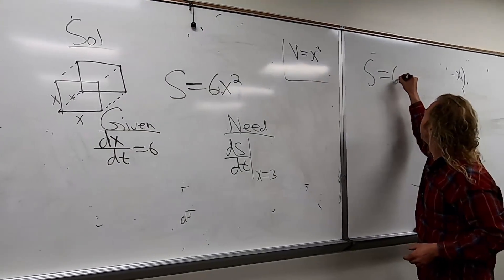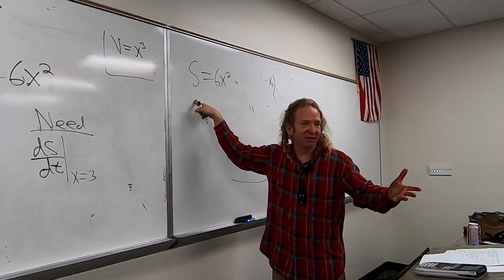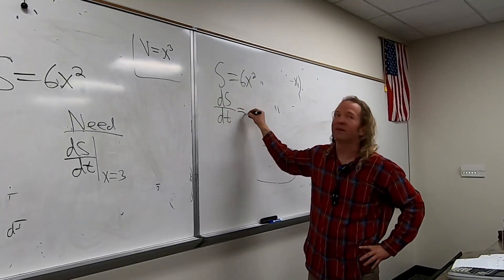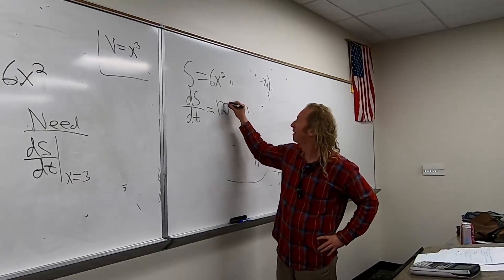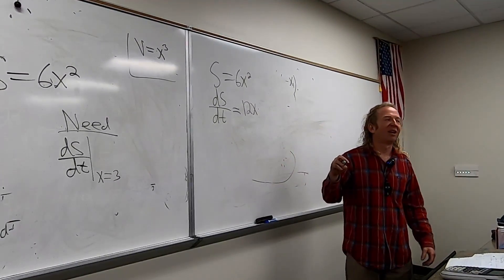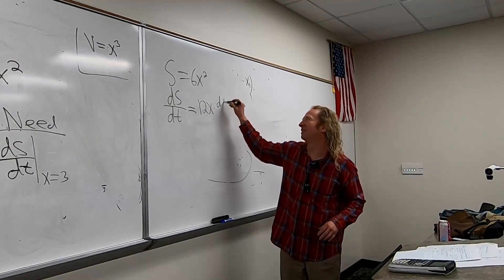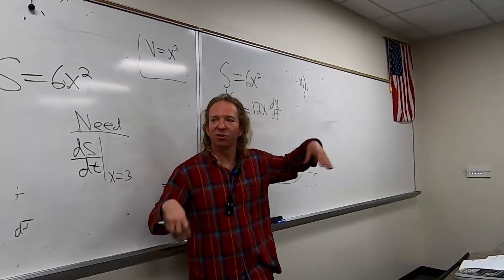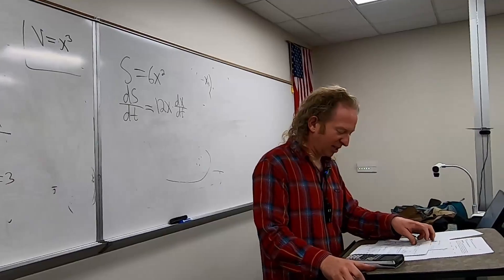So we have S = 6X². We're going to take the derivative of this with respect to T. On the left-hand side we get dS/dt. On the right-hand side it'll be 12X times dX/dt — chain rule, right? You bring down the two and multiply by the derivative of the inside piece.